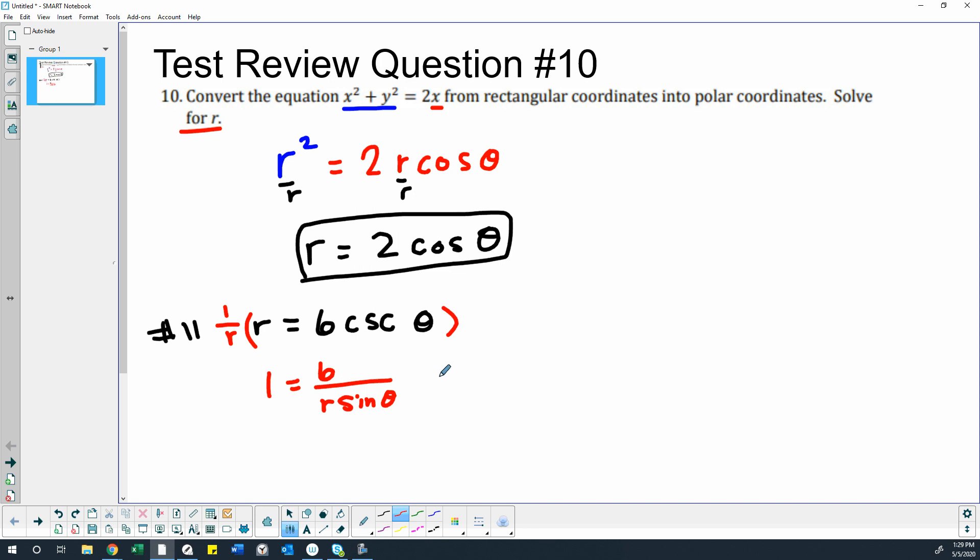So then that allows us to change 6 over r sine theta into 6 over y. So 1 equals 6 over y and then all we have to do is cross multiply. Yep. It's just a line, right? Just a horizontal line.